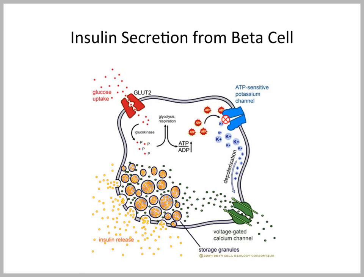Inside the beta cell, glucose is then rapidly phosphorylated by glucokinase. This leads to the formation of glucose 6-phosphate, which can then undergo glycolysis, TCA cycle, and go through the electron transport chain, leading to the formation of ATP, water, and CO2.